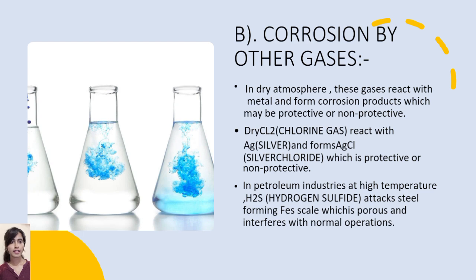Corrosion by other gases. In a dry atmosphere, these gases react with metal and form corrosion products which may be protective or non-protective. Dry chlorine gas reacts with silver and forms silver chloride, which may be protective or non-protective. In petroleum industries, at high temperatures, hydrogen sulfide attacks steel, forming an iron sulfide scale which is porous and interferes with normal operations.